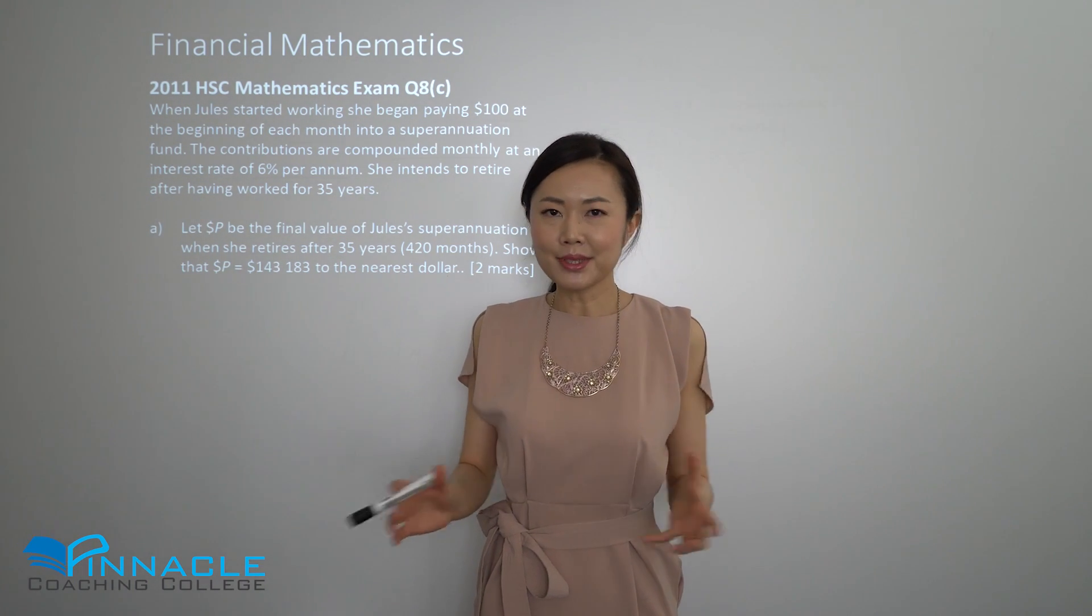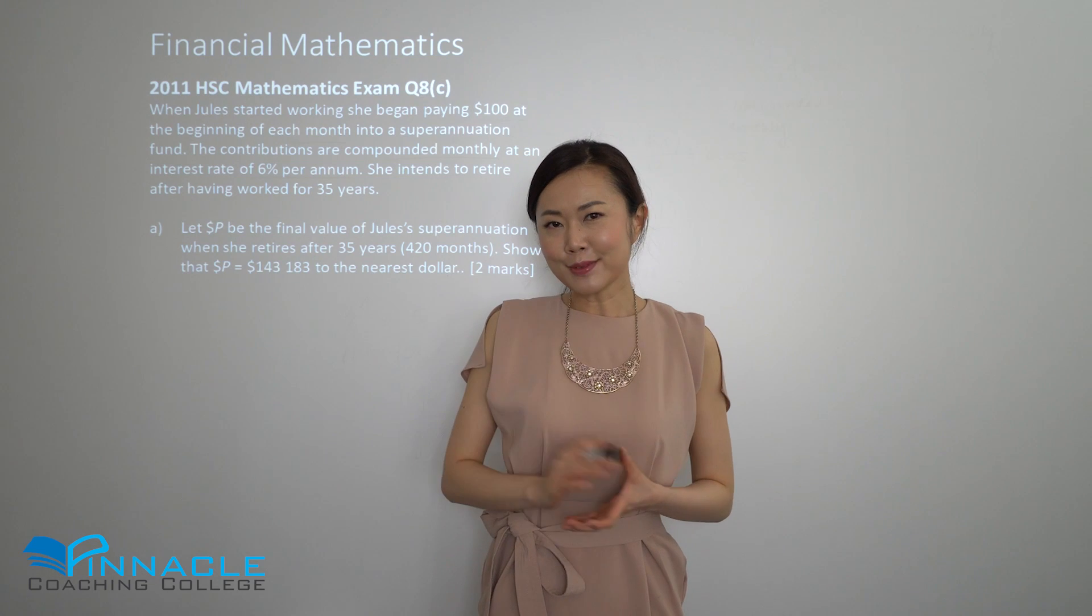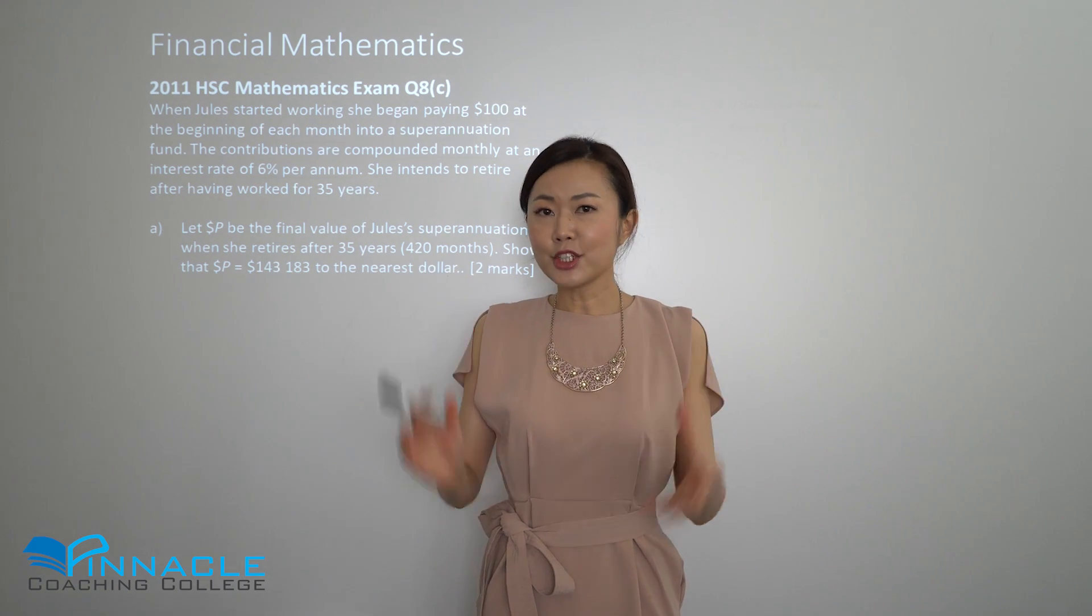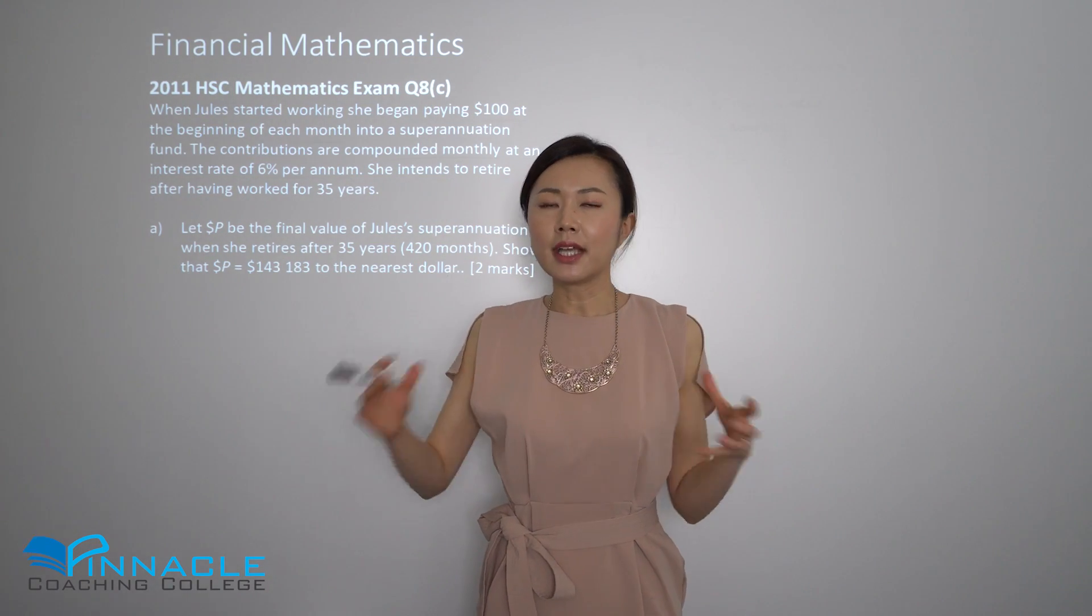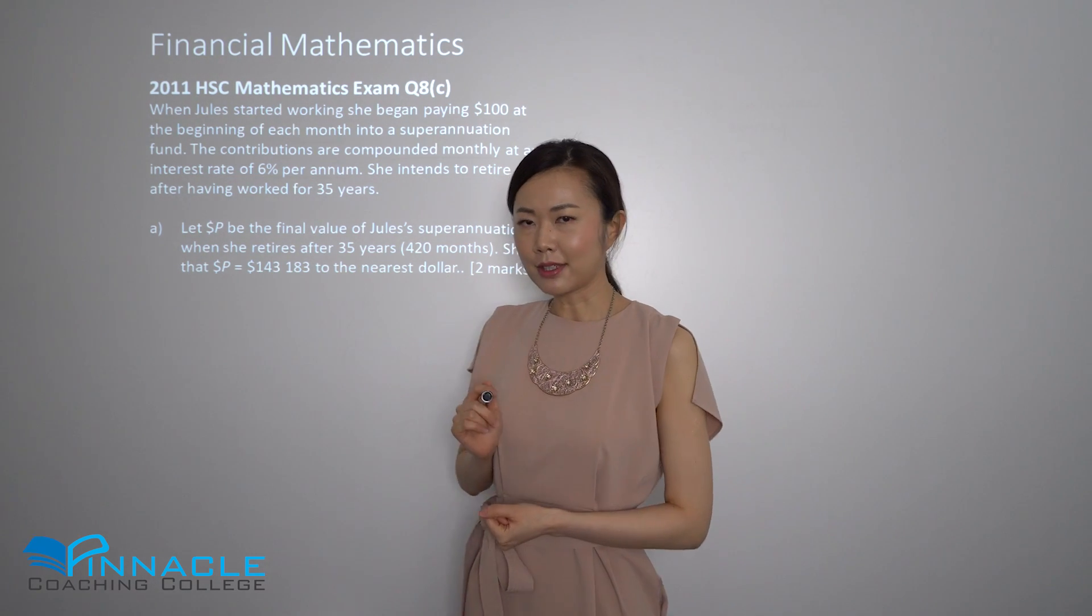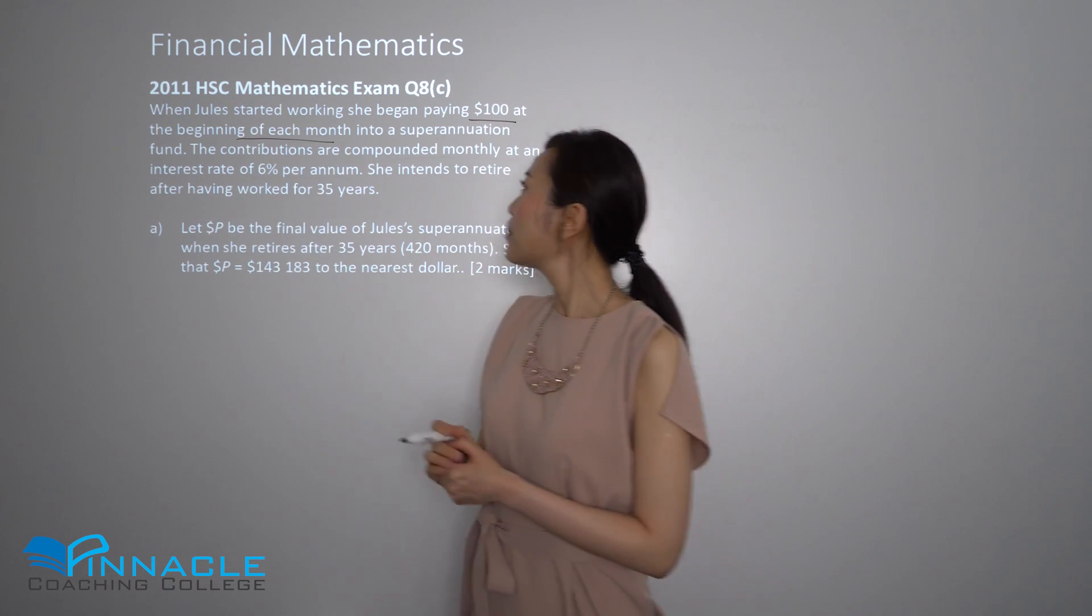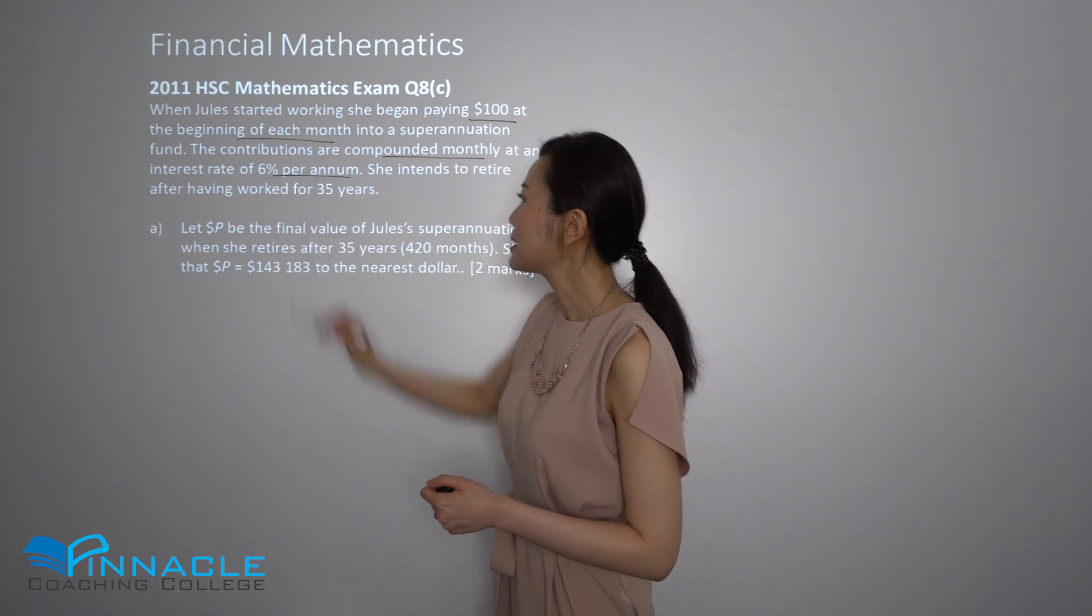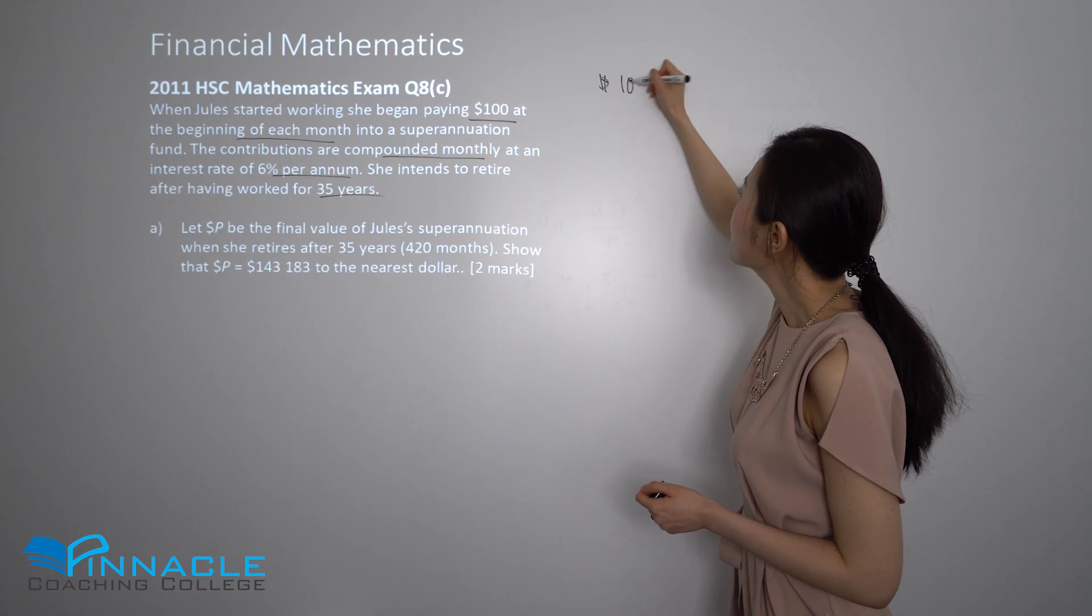Now that you've seen the key formulas applicable to this area, let's take a look at a very challenging HSC question on financial maths. The one I'm going to show you today is the 2011 question 8c. This one is challenging because there are some non-standard facts that affect your compounding. To start, let's look at the facts. We've got Jules who is going to be paying $100 at the beginning of each month into a superannuation fund, compounded monthly, 6% per annum for 35 years.